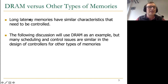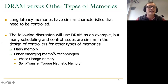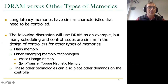Long latency memories are also difficult to control because they're usually off-chip, requiring an interface with the outside of the processor. Other memories like flash, phase change memory, spin transfer torque magnetic memory, and memristors have characteristics similar to DRAM but with even more constraints like endurance and wear leveling — cells wear out in flash memory and those issues need to be handled by the controller.